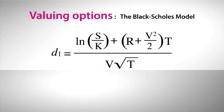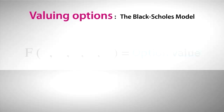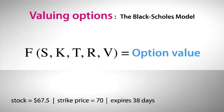Let's assume for a moment that this extremely complex equation can be represented by a simple function we'll call F. So let's say we want to calculate the so-called fair value of a call option on UPS. If the stock is trading at 67.5, what's the fair value of a 70-strike call that expires in 38 days? All we need to do is plug in these five variables to calculate the theoretical fair price for the option.